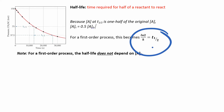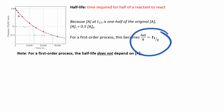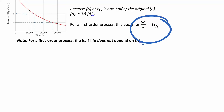The half-life for a first-order process doesn't even depend on the initial concentration, which is why radioactive decay — like carbon dating for fossils — is a first-order process. It doesn't matter how much you started with; the half-life is always going to be the same. So it takes the same amount of time to go from 75 down to 37.5, and so on.